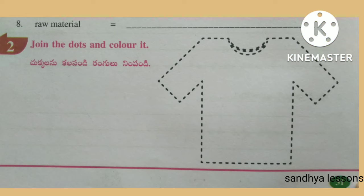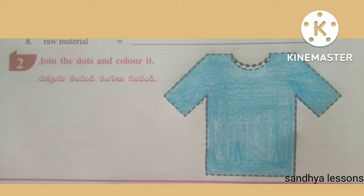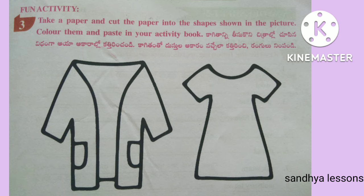Second, join the dots and color it. Third, take a paper and cut the paper into the shapes shown in the picture. Color them and paste in your activity book.